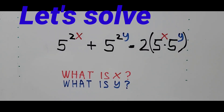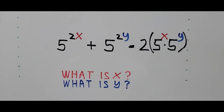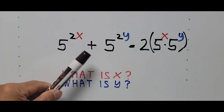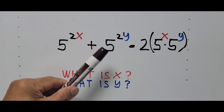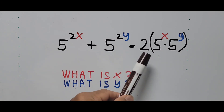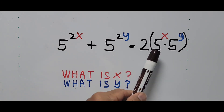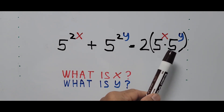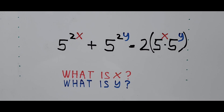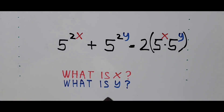Welcome to Cassiano Easy Math. This video is about solving another exponential equation: 5 raised to 2x plus 5 raised to 2y equals 2 times 5 raised to x multiplied by 5 raised to y. We are finding the value of x and the value of y.